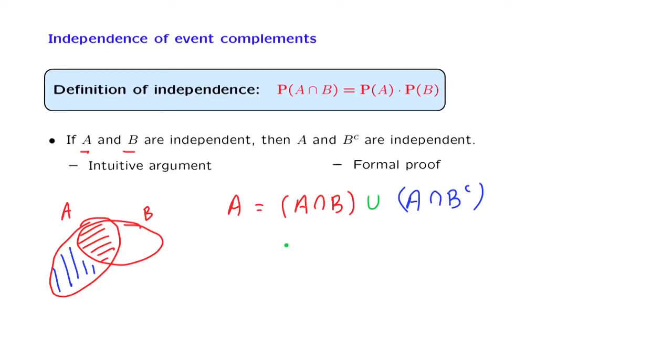and therefore, by the additivity axiom, the probability of A is equal to the probability of A intersection B plus the probability of A intersection with B complement.